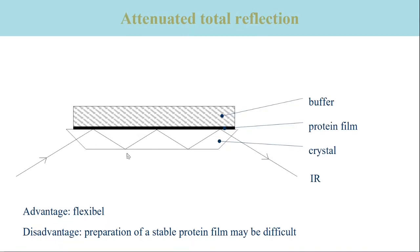The next slide illustrates the technique of attenuated total reflection, which is commonly abbreviated as ATR. A sample film is prepared on an infrared-transmittent crystal. A buffer is placed on top of the film. This is usually only possible for membrane proteins, because only they attach relatively firmly to the crystal.